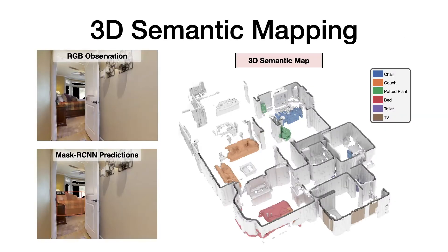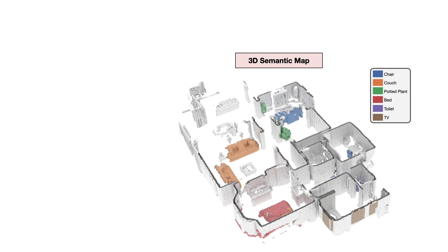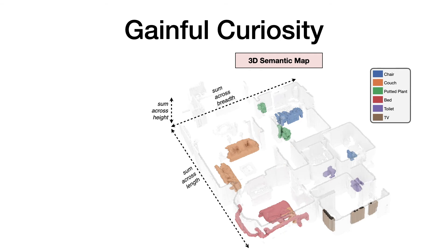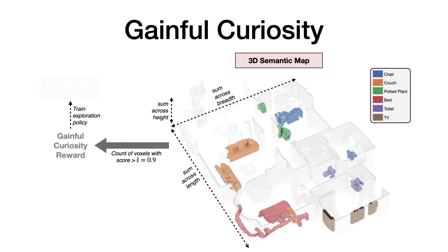We define an intrinsic motivation reward called gainful curiosity to train the active exploration policy to maximize exploration of objects with high confidence. We define a score threshold of 0.9 for confident predictions. The gainful curiosity reward is then defined to be the number of voxels in the 3D semantic map having greater than 0.9 score for at least one semantic category. This reward encourages the agent to find new objects and keep looking at them from different viewpoints until it gets a highly confident prediction from at least one viewpoint.